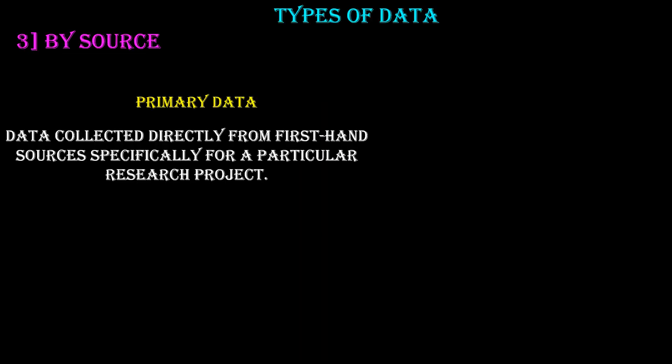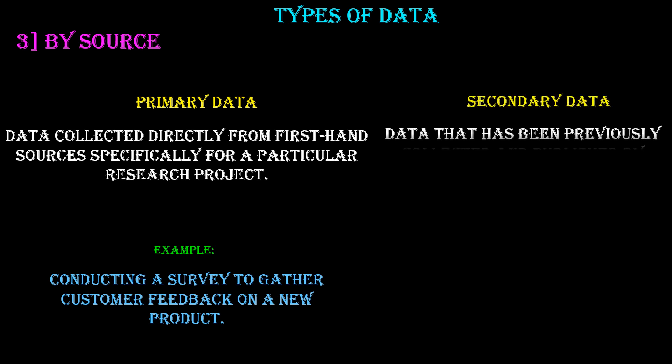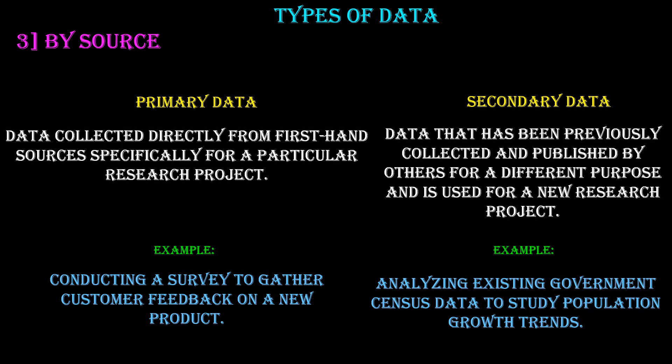By source, we have primary data — data collected directly from first-hand sources specifically for a particular research project. For example, conducting a survey to gather customer feedback on a new product. Secondary data is data that has been previously collected and published by others for a different purpose and is used for a new research project — for example, analyzing existing government census data to study population growth trends.